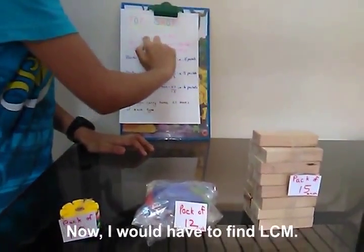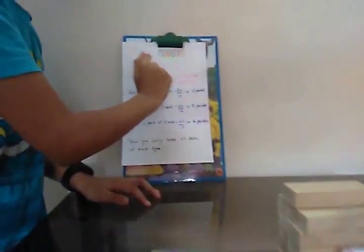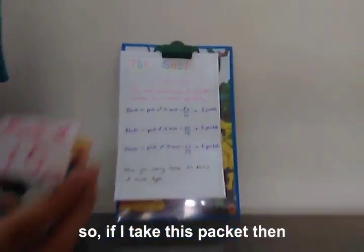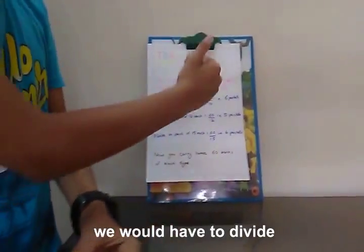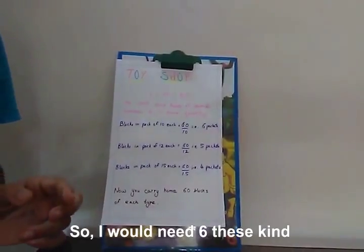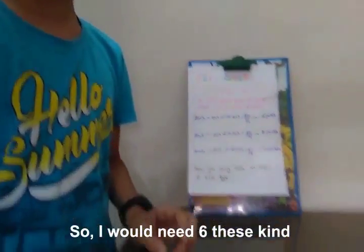Now, I would have to find the LCM. We know that the LCM is 60. So if I take this packet, I would have to divide 60 by 10 to get 6. So I would need 6 of these kinds of packets.